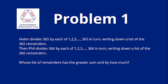Then Phil divides 366 by each of 1, 2, 3, and so on up to 366 in turn, writing down a list of the 366 remainders. Whose list of remainders has the greater sum, and by how much?